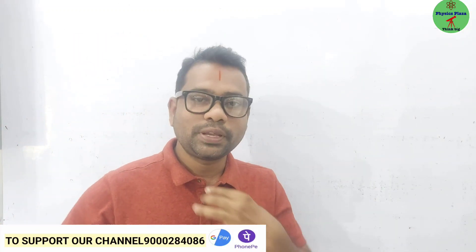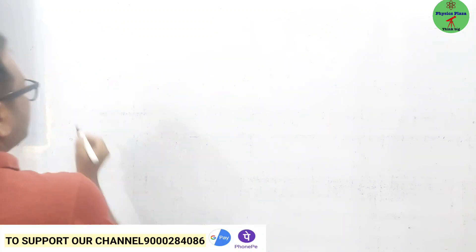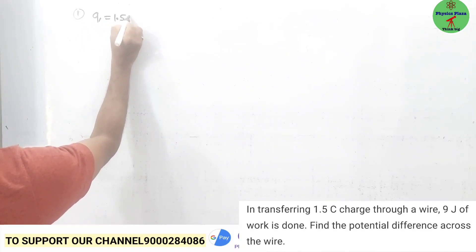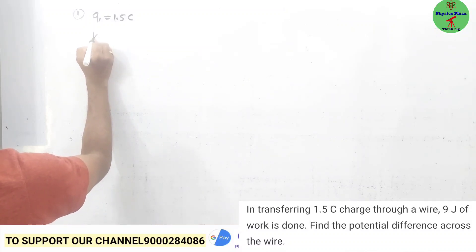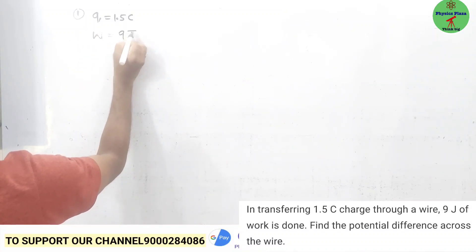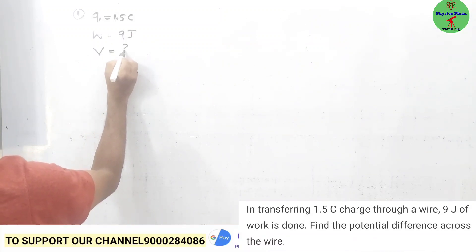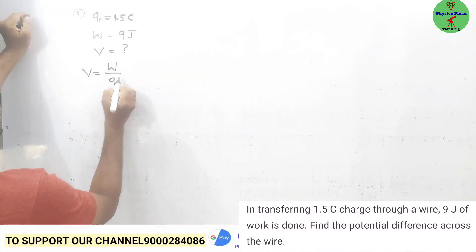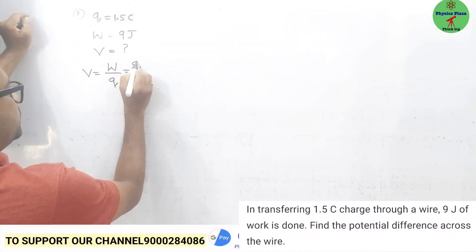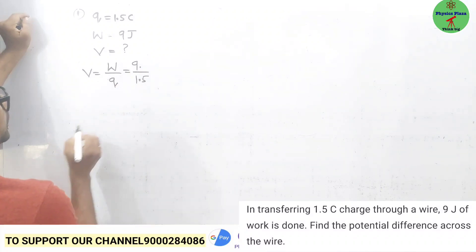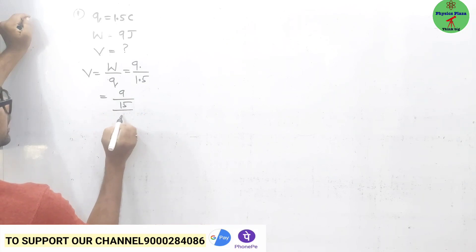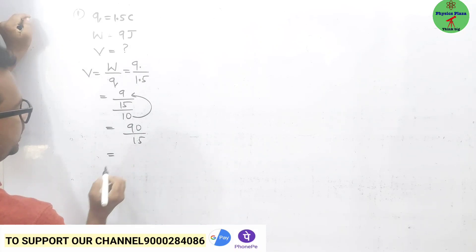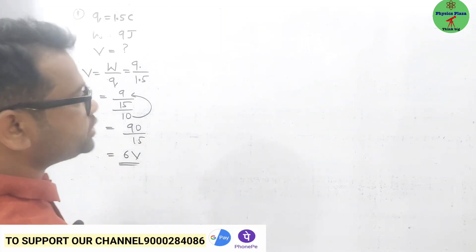Now numericals based on unit B of current electricity. First numerical: a charge of 1.5 coulomb is given. In order to move this much charge, the work done is 9 joules. They are asking us to calculate the potential difference. V = W/Q = 9 / 1.5. Writing 1.5 as 15/10: this becomes 9 × 10 / 15 = 90 / 15 = 6 volt.